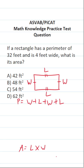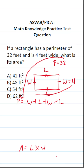In the problem, it told us the width of this rectangle is 4 feet, and likewise it told us this rectangle had a perimeter of 32. So let's plug in 32 for P and 4 for W, and that will enable us to find the length. This becomes: 32 equals 4 plus L plus 4 plus L.